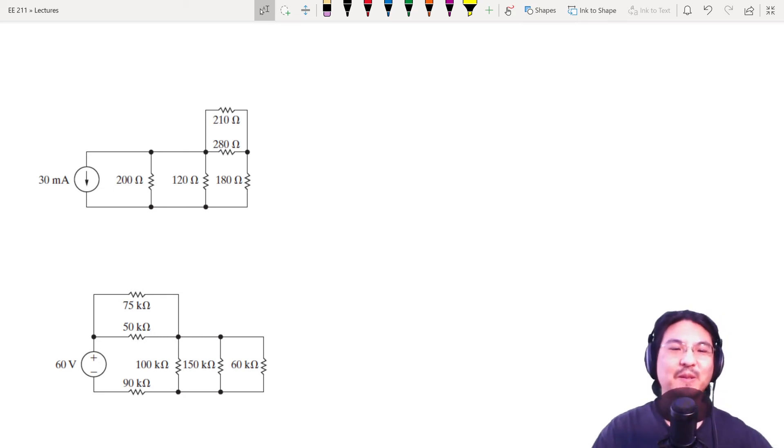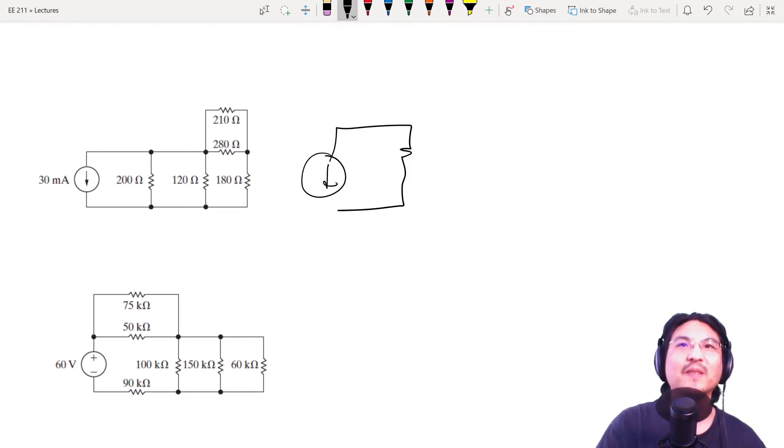Everybody, let's talk about some circuit analysis techniques using equivalent transformations. For example, if you have this circuit and you want to find the equivalent resistance across this current source, you can do it, right? Because look, these two are in parallel, so then you can replace...